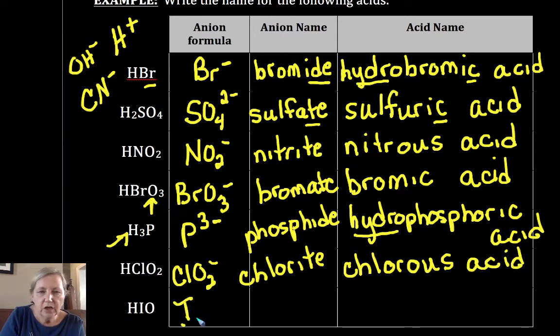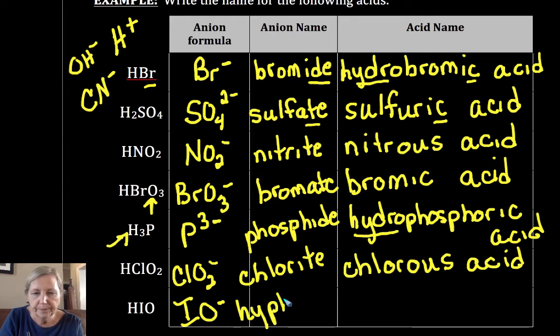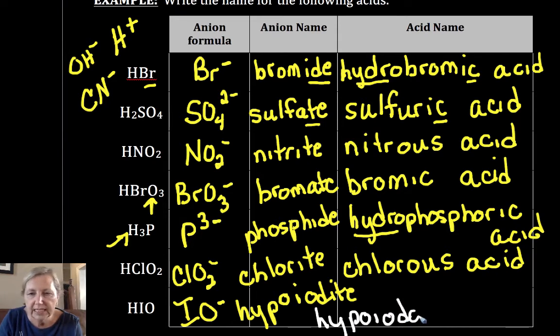And IO- is hypoiodite. So that then becomes hypoiodous acid. Hopefully you're seeing that pattern pretty clearly. It takes a lot of practice to get these down very well.